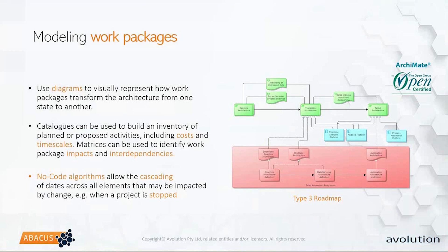Understanding conflicts between these work packages is notoriously difficult — these work packages will absolutely be bouncing off each other and changing the same things. The additional benefit of using an algorithm-based approach is that we can actually start cascading dates across the architecture. If projects are changing various elements or there's a stop-start process to a project, this has an entire ripple effect throughout your architectural views. If we change one project it will probably be impacting something else — and this no-code approach helps you understand that in much more detail.